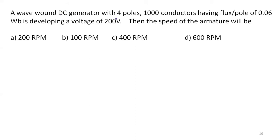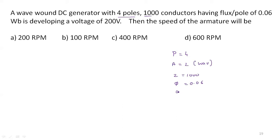A wave wound DC generator with 4 poles. Number of poles equals 4. For wave winding, the number of parallel paths equals 2. It has 1000 conductors with a flux per pole of 0.06 Webers, developing a voltage of 200 volts. We have to find the speed. Again using the formula: Eb equals φZNP divided by 60A.